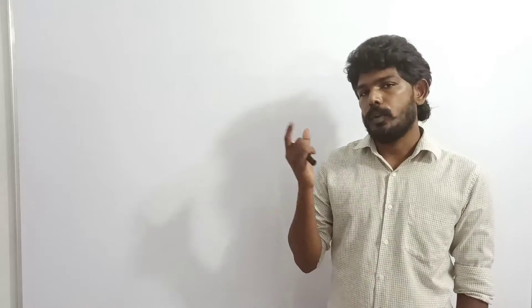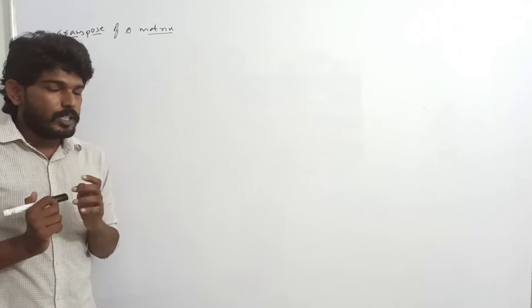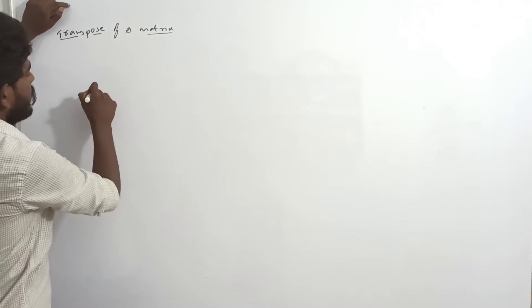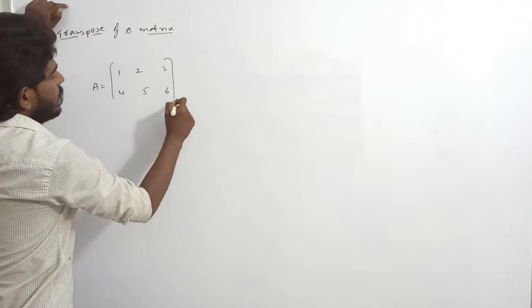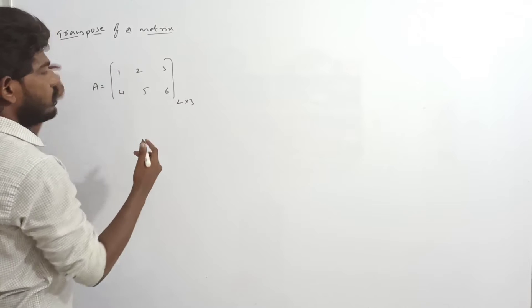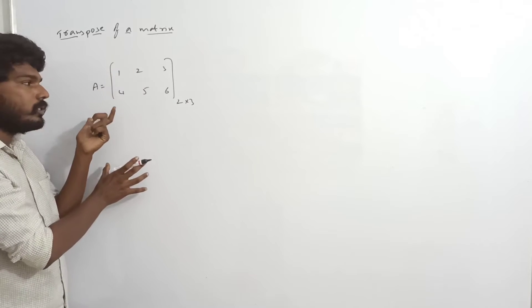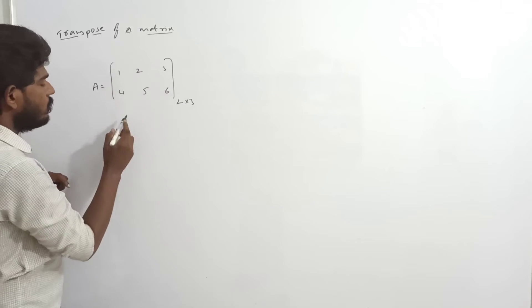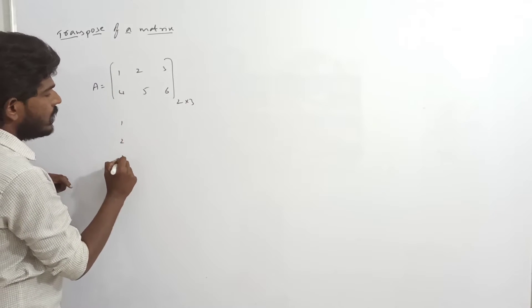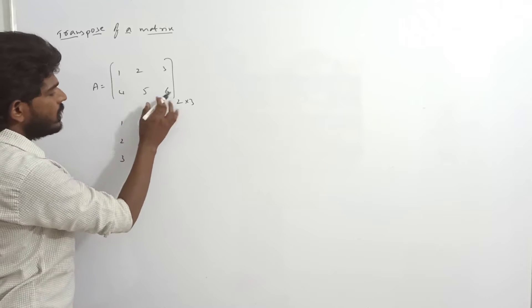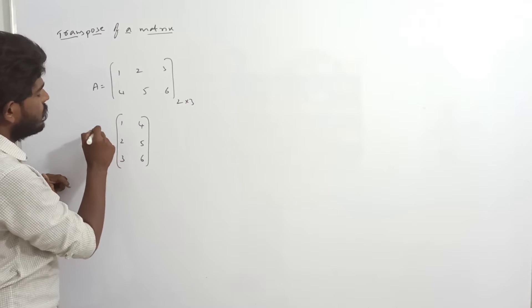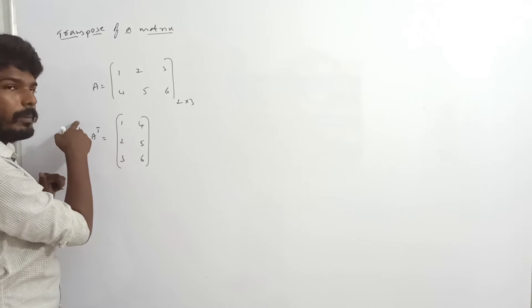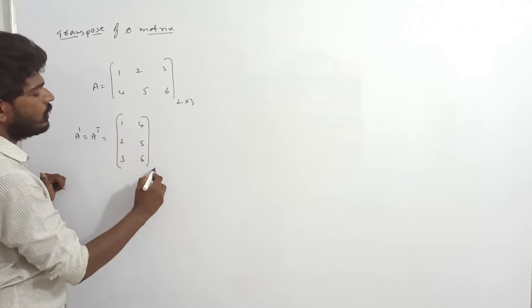Today we have a small concept of transpose. We have a matrix of order 2 by 3 — 2 rows and 3 columns. The first row is 1, 2, 3 and the second row is 4, 5, 6. So A transpose is represented by A dash or A transpose, and it is of order 3 rows and 2 columns.